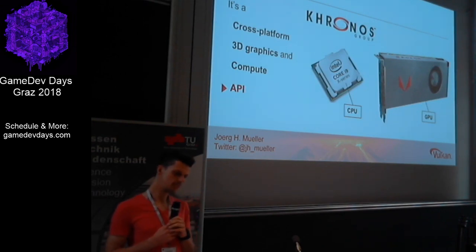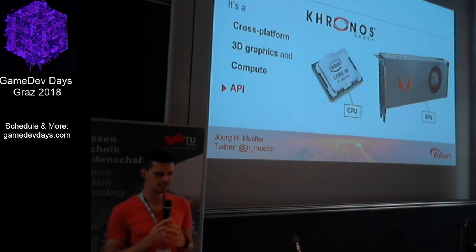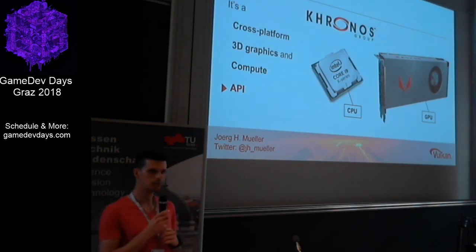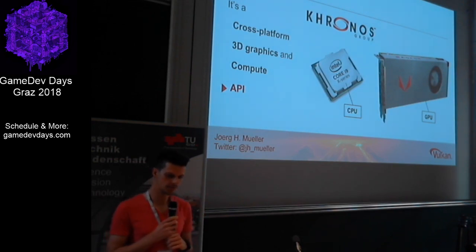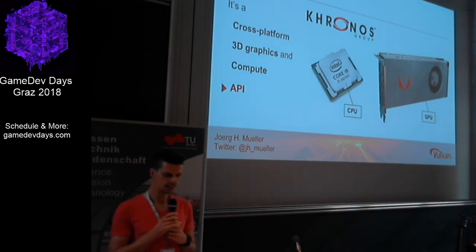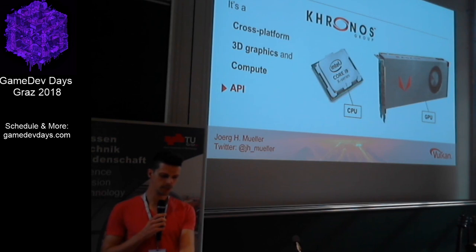So what is Vulkan? First of all, it's an API — basically the interface that programmers use to talk to the graphics card. Usually all your program code runs on the CPU, the processor of the computer, and the GPU does graphics and maybe some compute stuff. The API is what allows programmers to use the GPU, the graphics card.